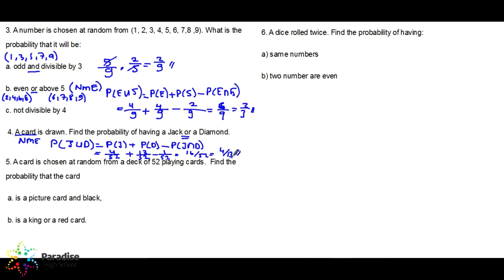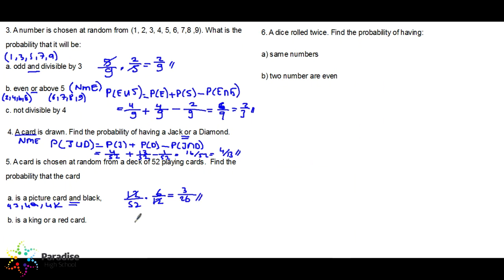Probability of a jack is four over 52. Probability of diamond is 13 over 52. Probability of jack and diamond is one over 52 — there is only one jack of diamonds. That gives 16 over 52, which simplifies by four to four over 13. Next question: a card is chosen at random from 52 cards — find the probability of a picture card AND black. How many picture cards? Four jacks, four queens, four kings — 12 total. So 12 over 52. Out of those 12, six are black: two black jacks, two black queens, two black kings. Six over 12, so the answer simplifies to three over 26.